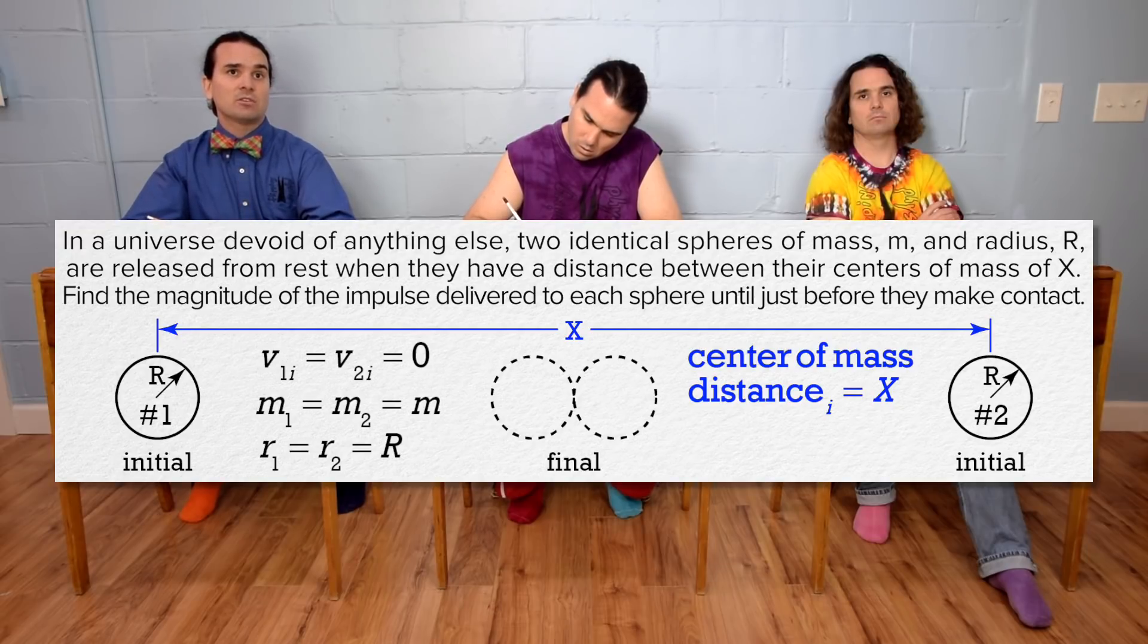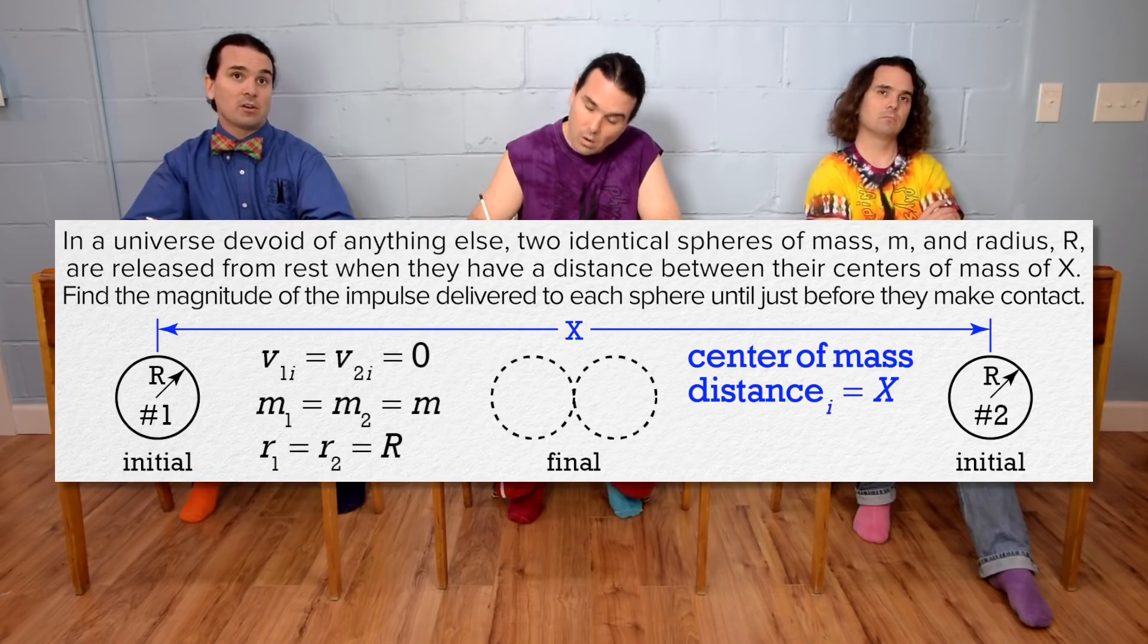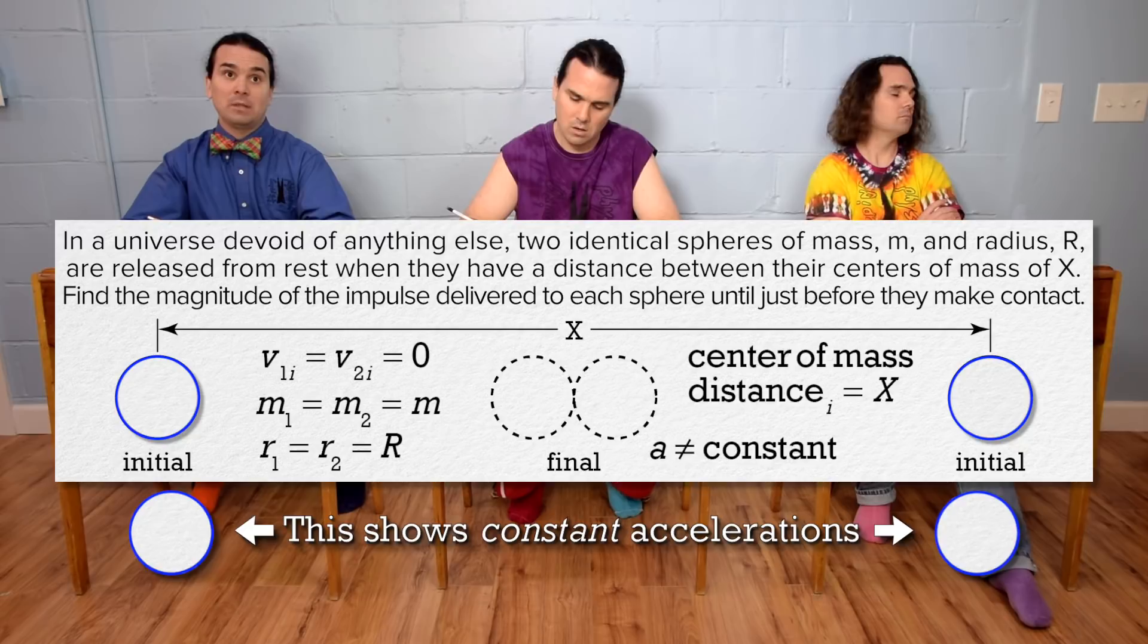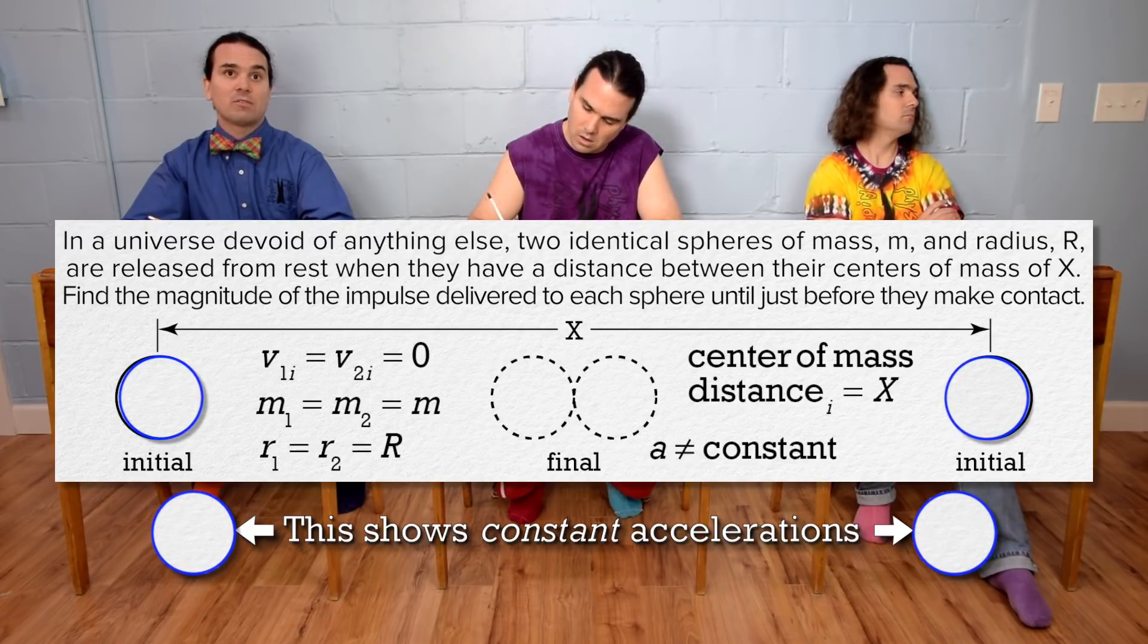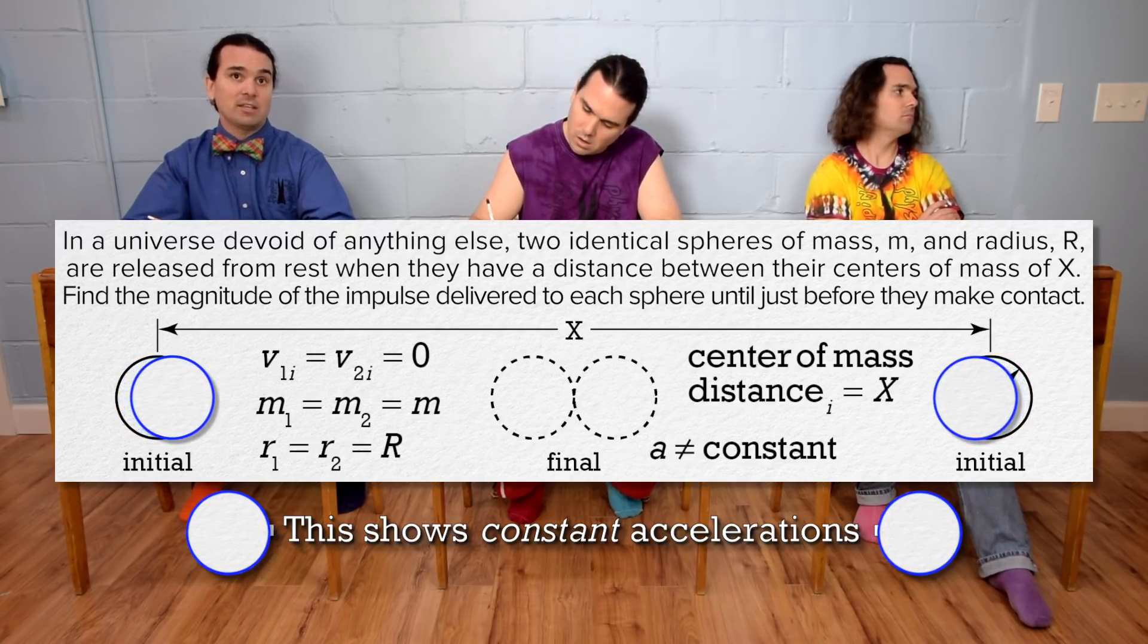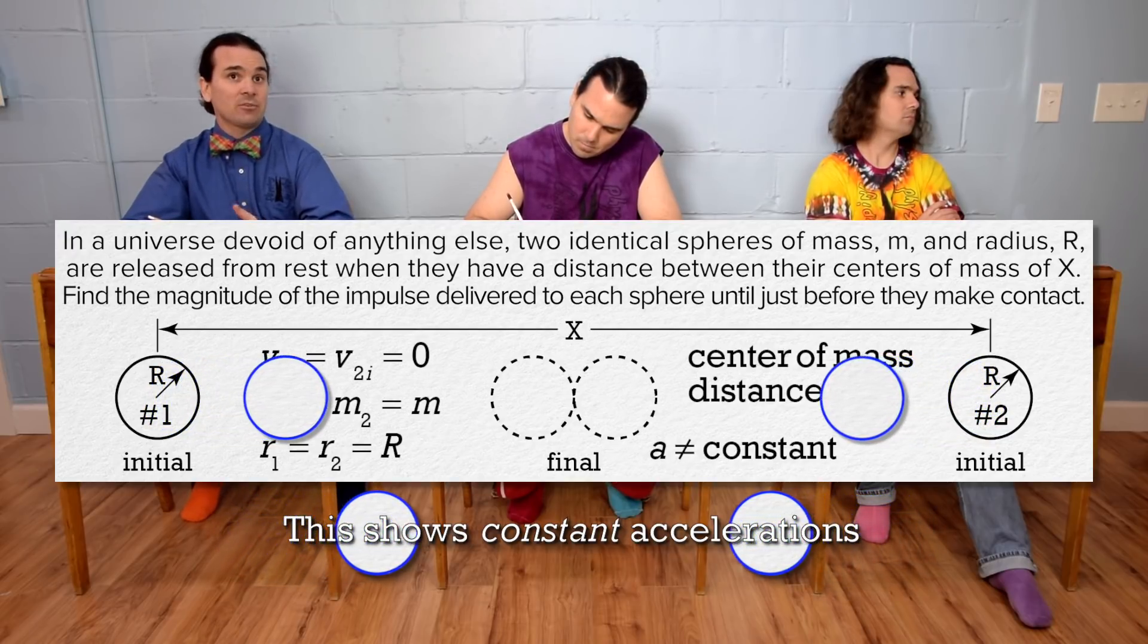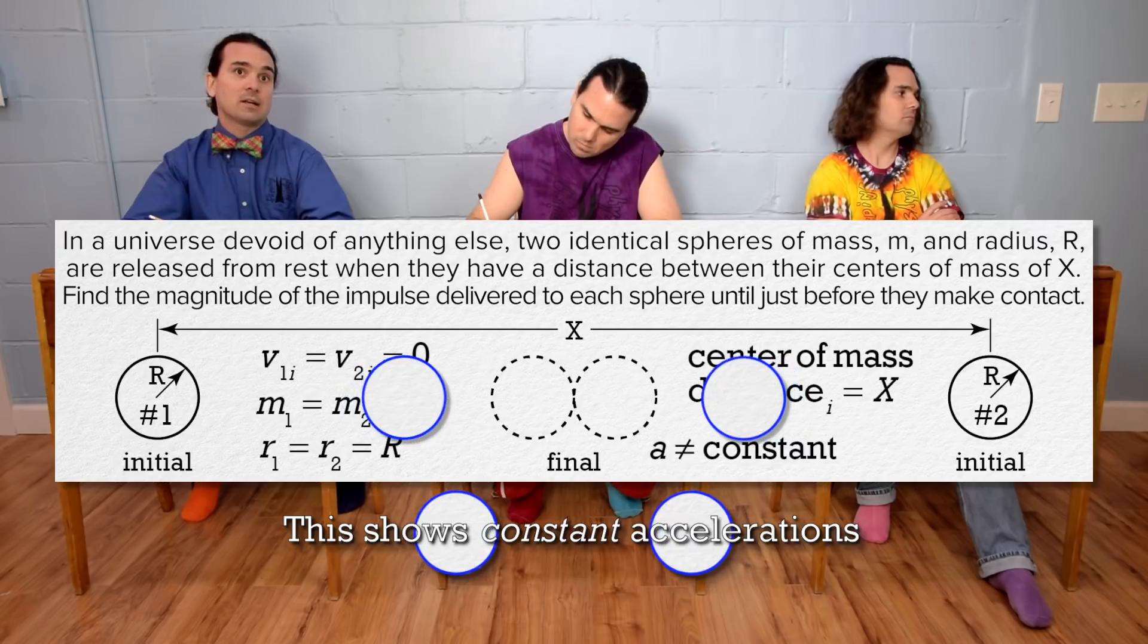Given that these two spheres are the only objects in the universe, they will be pulled towards one another by the force of gravity. This will not be uniformly accelerated motion because the force of gravity pulling on each sphere will increase as the distance between the two spheres decreases, which means the acceleration will actually increase as the spheres get closer to one another.